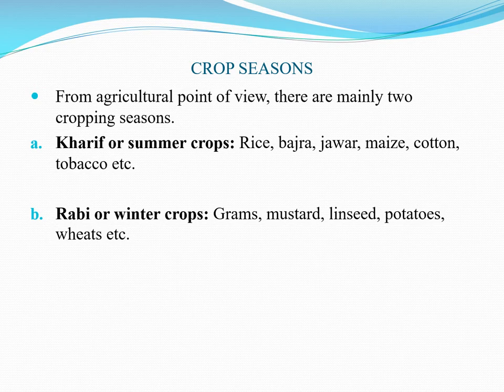The second type is Rabbi or winter crops, also called winter crops. Examples include grams, mustard, linseed, potatoes, wheat, and similar crops, which are all classified as winter or Rabbi crops.